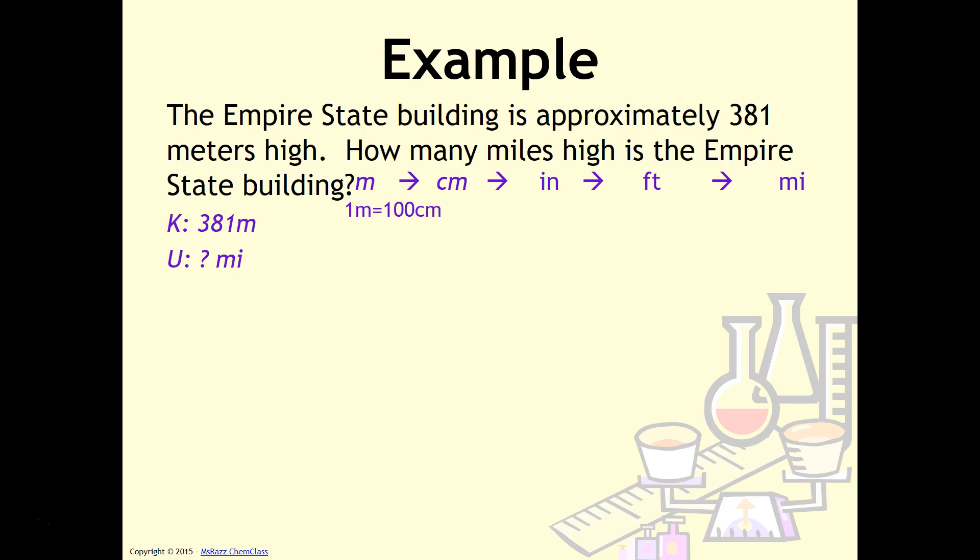And then we write out our conversion factors underneath, and then we take our known and put it over one. We draw our multiplication sign and our line. We have meters on top, and so therefore meters must go on bottom.